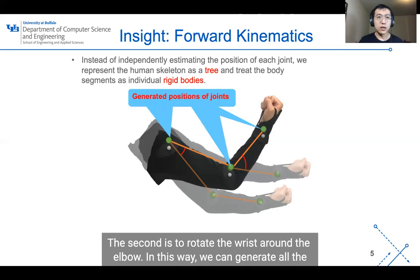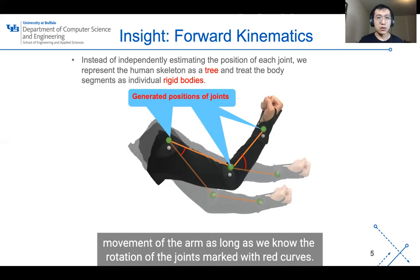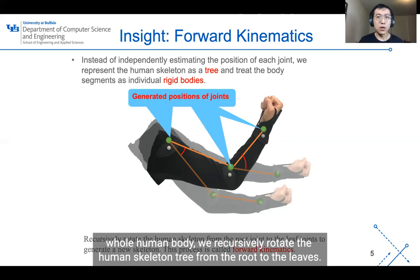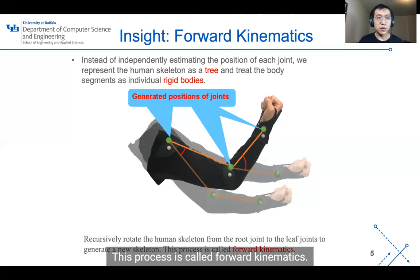In this way, we can generate all the movements of the arms as long as we know the rotation of the joints marked with red curves. Similarly, to generate a skeleton from the whole human body, we recursively rotate the human skeleton tree from the root to the leaves. This process is called forward kinematics.